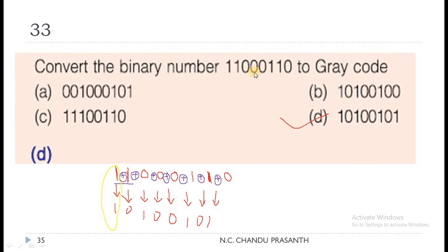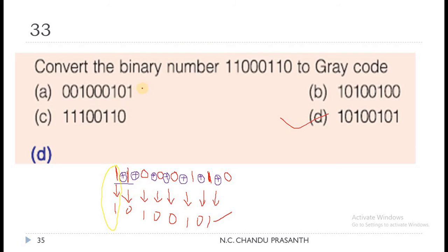Question 33: Convert binary number 11000110 to gray code. In binary-to-Gray conversion, the MSB bit is written as it is. Then we perform XOR between the previous bit and the current bit for each subsequent position. Applying this: 1 XOR 1=0, 1 XOR 0=1, 0 XOR 0=0, 0 XOR 0=0, 0 XOR 1=1, 1 XOR 1=0, 1 XOR 0=1. The correct option is D.